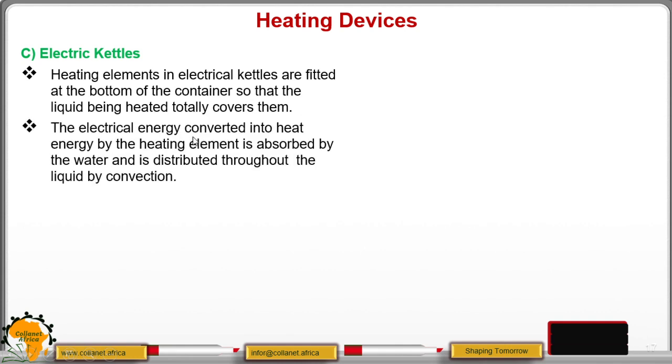Now, the electrical energy converted into heat energy by the heating element is absorbed by the water or the liquid that is being heated. And it is distributed through the liquid through the convection. Remember the transfer of heat in liquids. So, because it is at the bottom, the bottom part will be heated and then convection current will be formed.